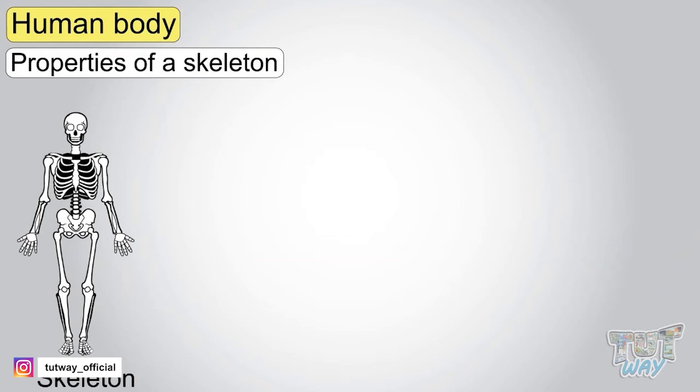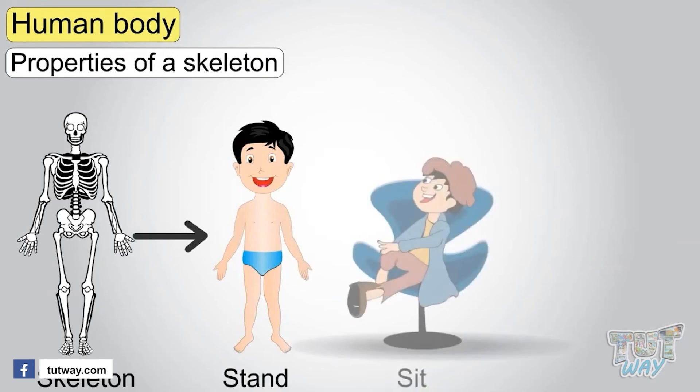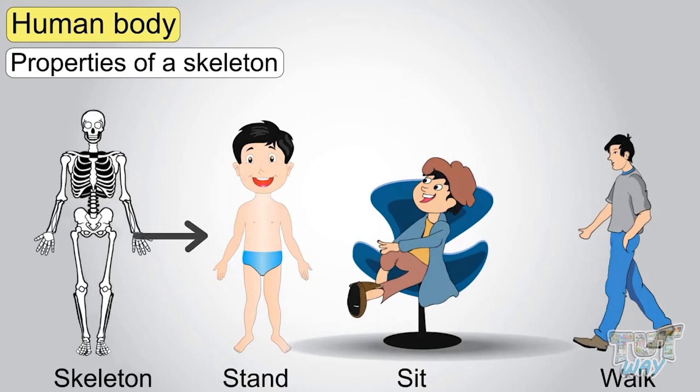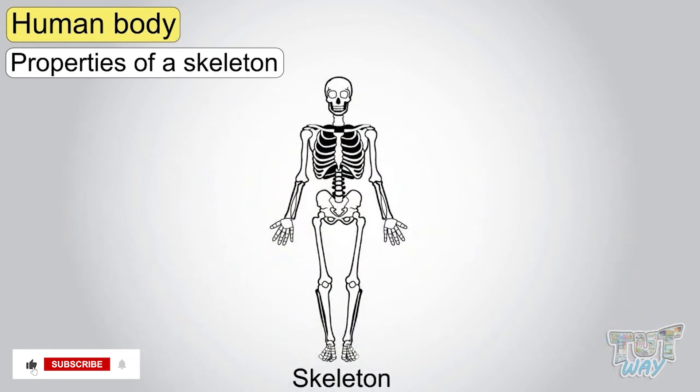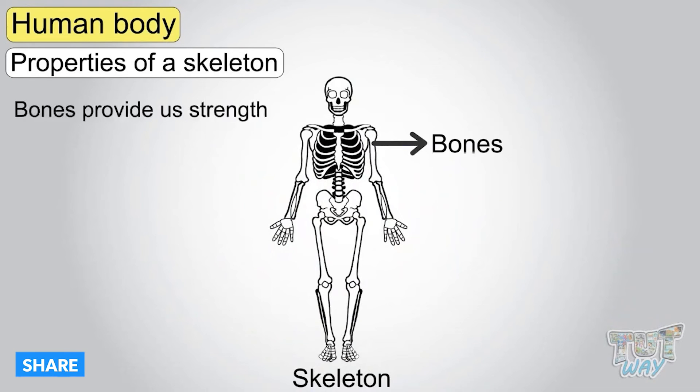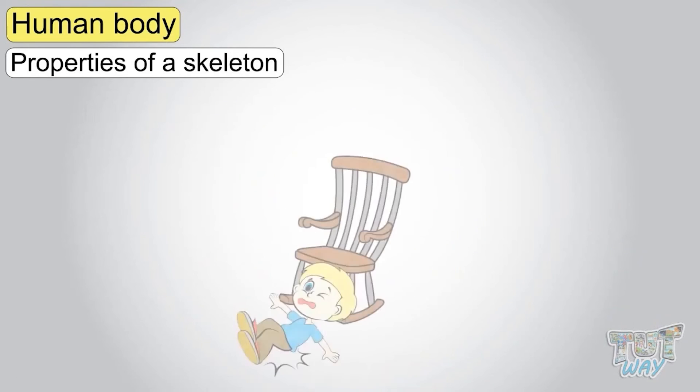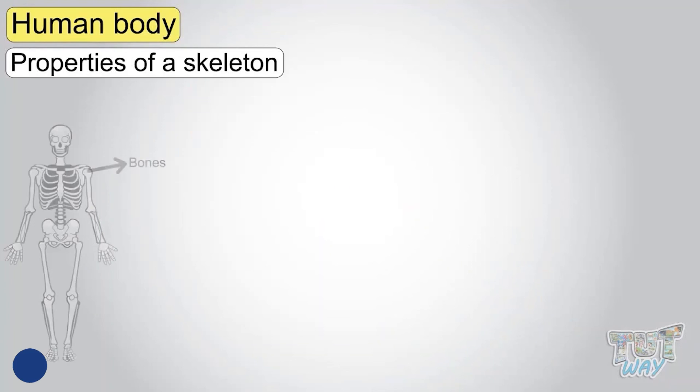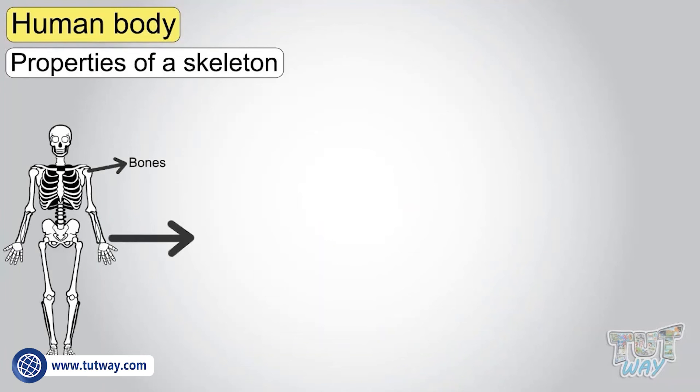Our skeleton is a frame that supports our body. We can stand, sit, walk, all because of this skeleton. Our skeleton is made up of bones that are very hard and strong to provide us strength. If you fall from your chair or you jump, you do not break down because bones are strong enough to make you run, jump and play.